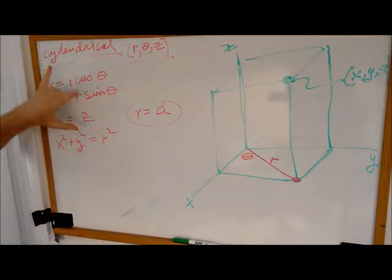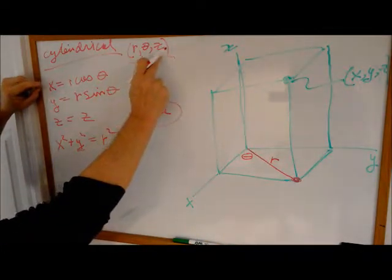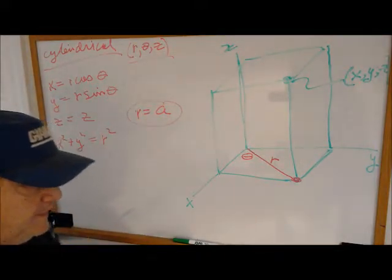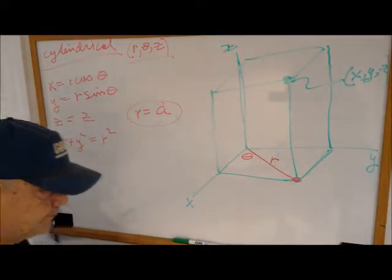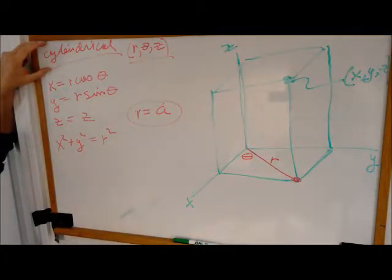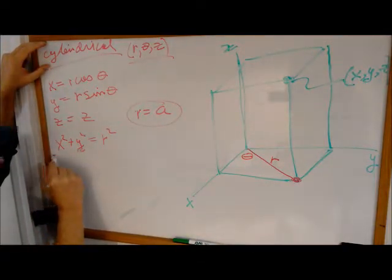We use this system to transform from rectangular to R, theta, Z when what we're working with, either the integrand or the bounds, are cylindrical-like. They have some properties that are shared with this system.